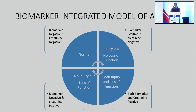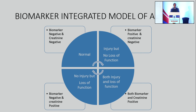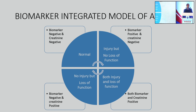We have a biomarker-integrated model of AKI — a two-by-two model. In the right upper quadrant we have biomarker positive and creatinine negative. In the right lower quadrant we have both biomarker and creatinine positive, meaning injury as well as loss of function. If somebody presents with biomarker negative and creatinine positive, as in the left lower corner, this is just CKD with rise in creatinine — he may or may not have AKI. This biomarker dimension of AKI helps differentiate patients into one of these four quadrants.